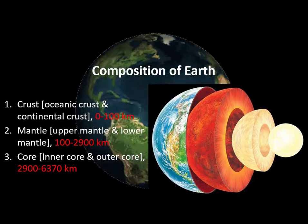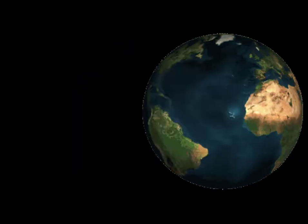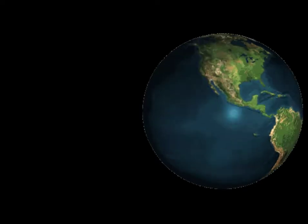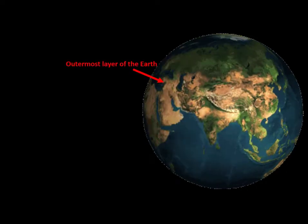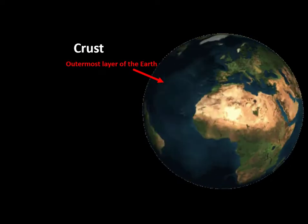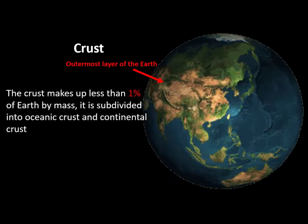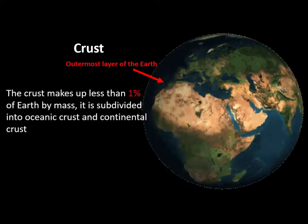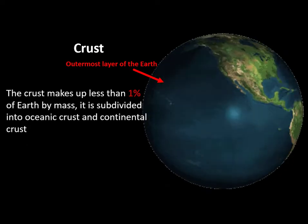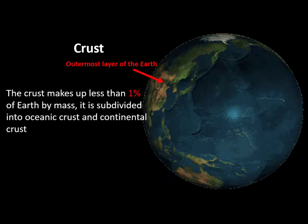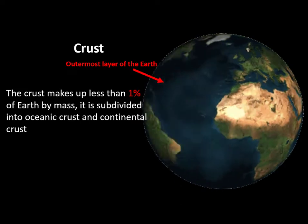Now I will discuss each of these layers in detail. The crust is the outermost layer of the Earth and it makes up less than one percent of Earth by mass. It is subdivided into oceanic crust and continental crust.